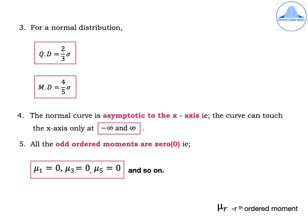Property 3: Based on the quartile deviation and the mean deviation. This usually comes as a two-mark question where they give you the value of sigma and ask you to find the quartile deviation or the mean deviation. The quartile deviation for a normal distribution is (2/3) sigma, and the mean deviation is MD equal to (4/5) sigma.